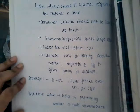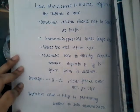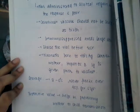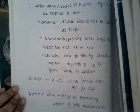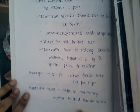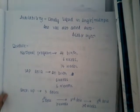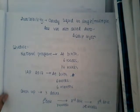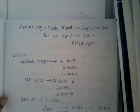It is stored at 2 to 8 degrees Celsius — never freeze the vaccine. The protective value is that it is helpful in preventing mother-to-child transmission. It is available as a cloudy liquid solution in single or multiple dose vials.